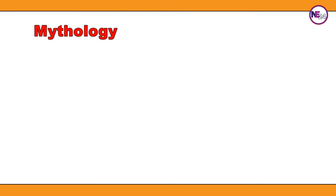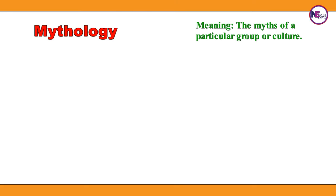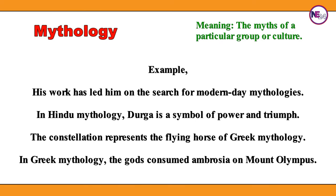Mythology: the myths of a particular group or culture. His work has led him on the search for modern-day mythologies. In Hindu mythology, Dago is a symbol of power and triumph. The constellation represents the flying horse of Greek mythology. In Greek mythology, the gods consumed ambrosia on Mount Olympus.